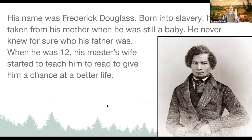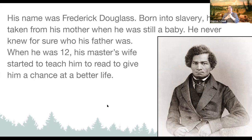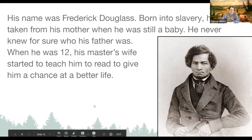Frederick Douglass is a really interesting and very important man. He was born into slavery, and when he was a baby, he was taken from his mother. He never knew for sure who his father was — that sometimes happened to children born into slavery, because they were considered property and could be taken away from their parents. So he must have been born in 1818. When he was 12, his master's wife started to teach him to read, to give him a chance at a better life.